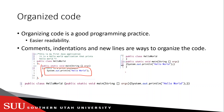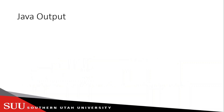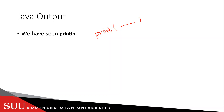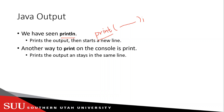Now let's talk about Java output. We have two ways to output in Java. We've seen `println` — `System.out.println`. We also have `System.out.print`, which is just `.print` with no `ln`. The difference is: `println` prints the output and then starts a new line after the statement, while `print` prints and stays on the same line.